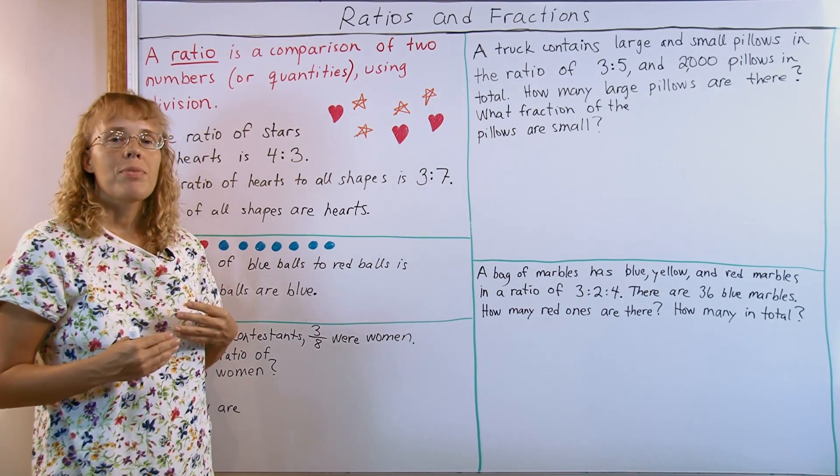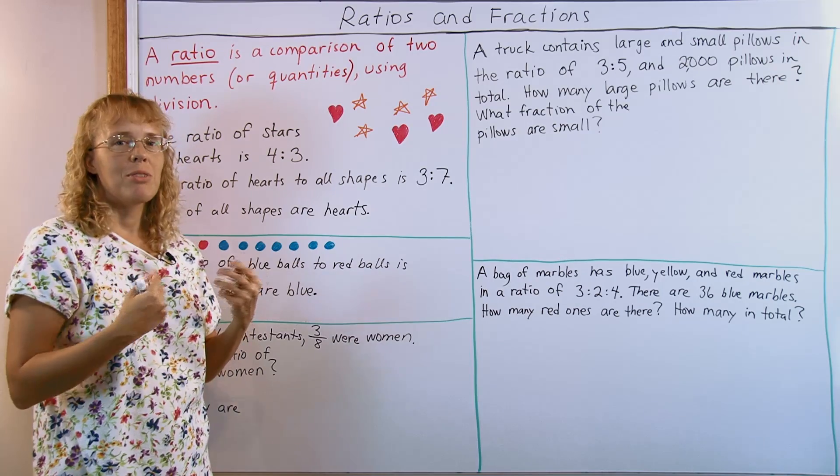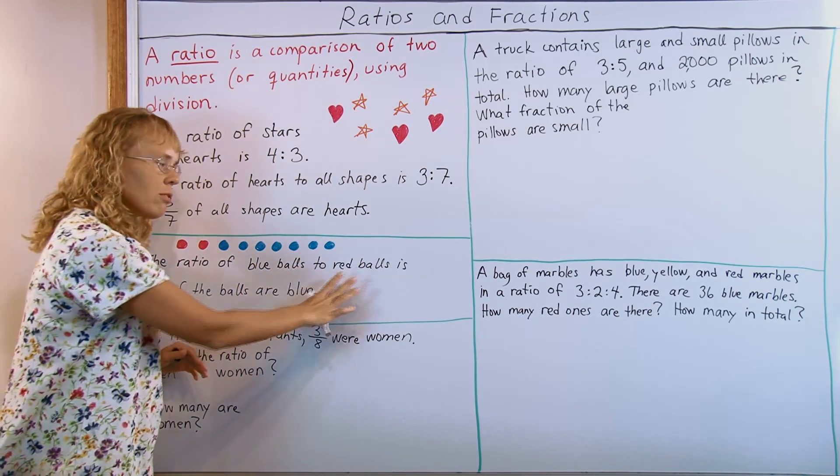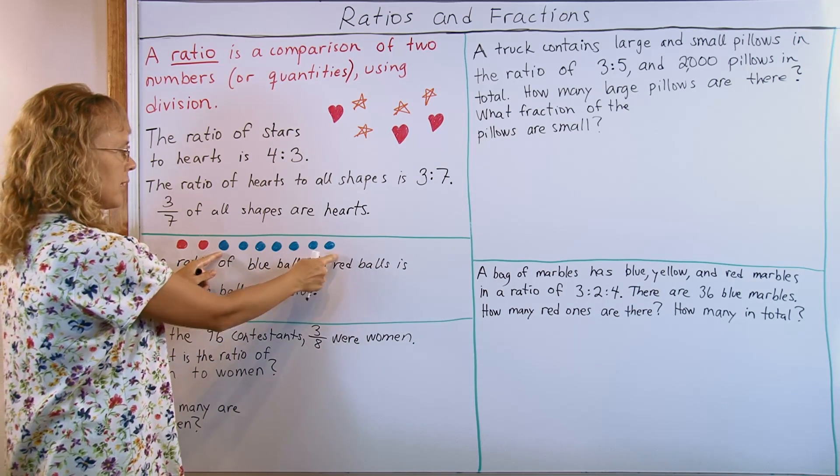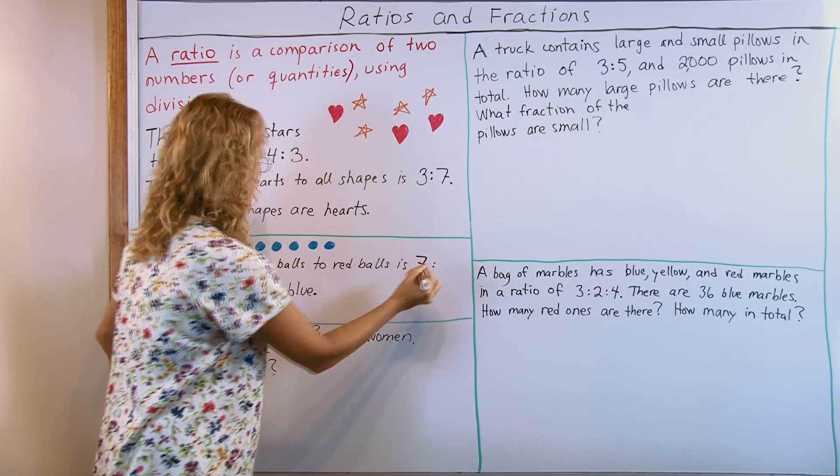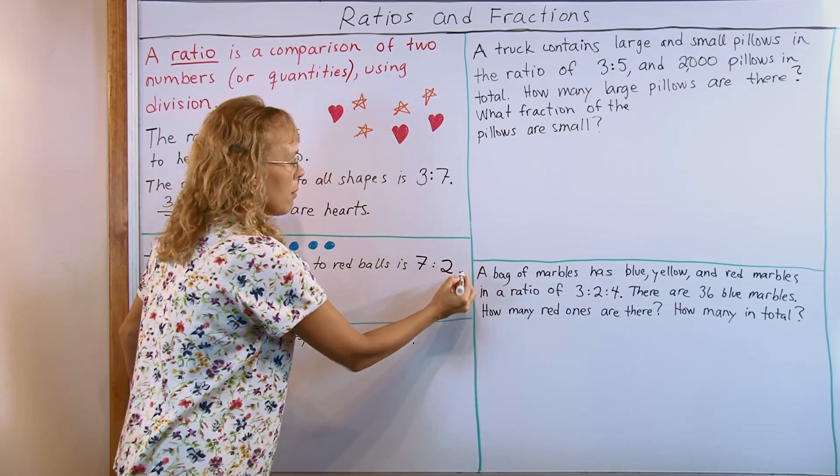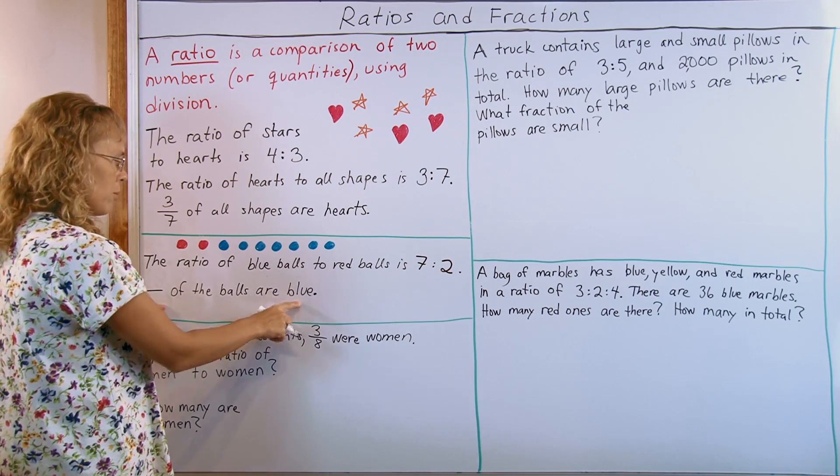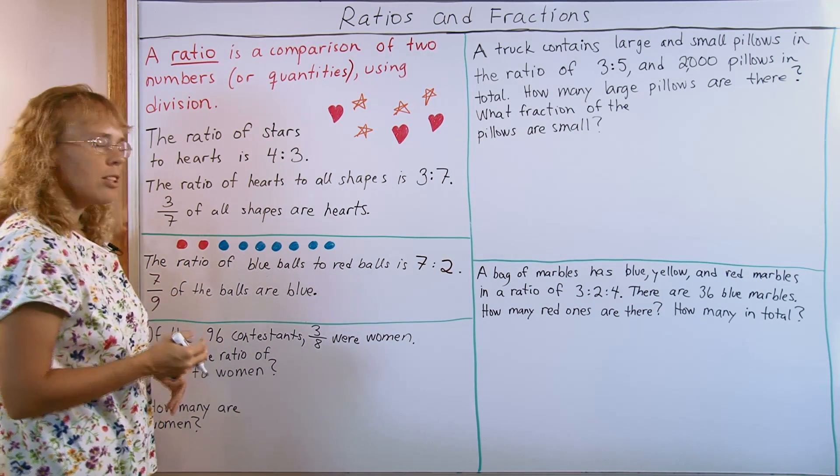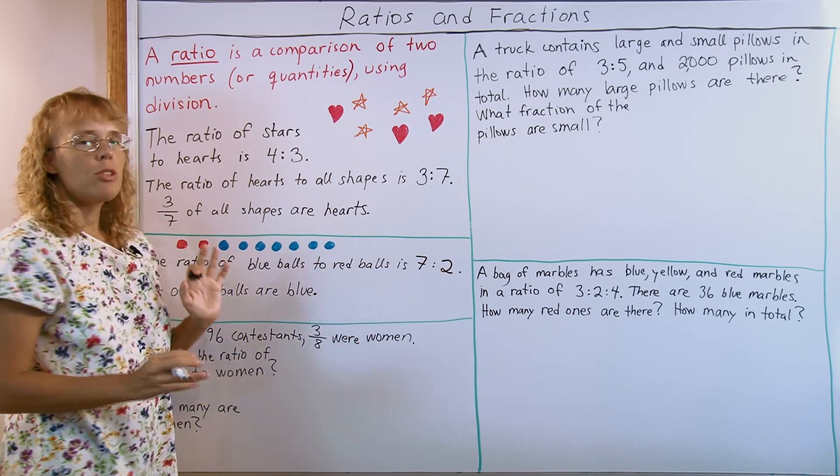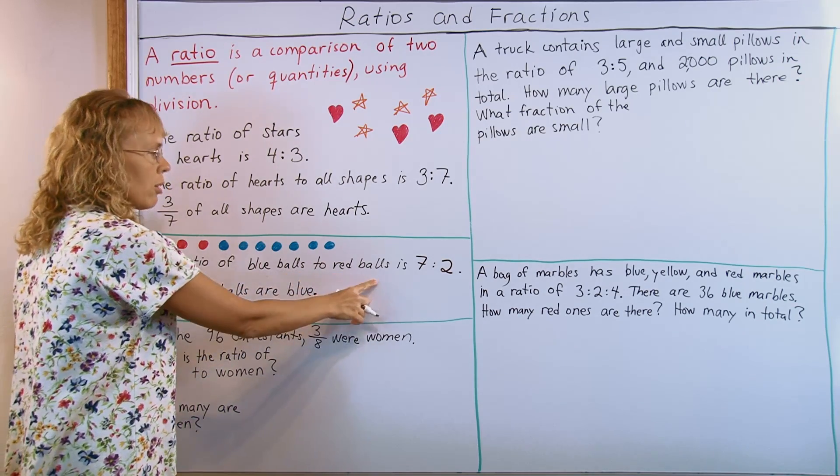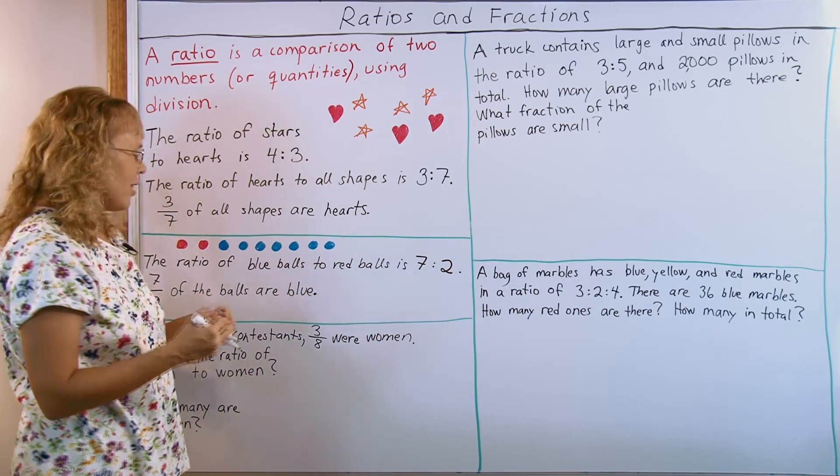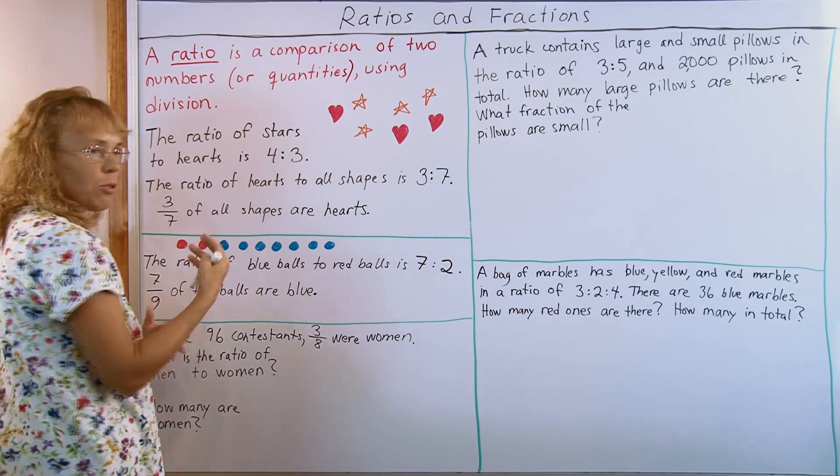First of all, I like to give students exercises where they will translate between fraction language and ratio language. For example, something like this: you have a picture and then the ratio of blue balls to red balls is what? I have 7 blue balls and 2 red balls, so the ratio is 7 to 2. But we also then ask what fraction of the balls are blue. We have 7 blue balls and 9 in total, so 7 ninths of the balls are blue. And from this picture, the student can also write that the ratio of red balls to blue balls is 2 to 7, and the ratio of red balls to all balls would be 2 to 9. For example, 2 ninths of the balls are red.